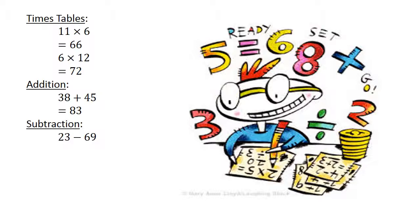Twenty-three minus sixty-nine equals negative forty-six. Thirty-five divided by seven equals five.